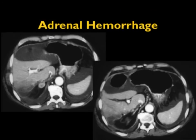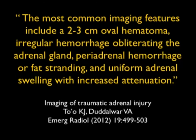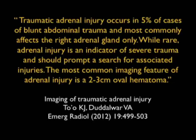Here's a good example of a patient who had resection of the liver and kidneys post-trauma — high density, right adrenal gland, very dense and round. That's classic adrenal hemorrhage. Per an article by Toki, the most common imaging features include a 2–3 cm oval hematoma, irregular hemorrhage obliterating the adrenal gland, perirenal hemorrhage or fat stranding, and uniform adrenal swelling with increased attenuation. Traumatic adrenal injury occurs in about 5% of cases of blunt trauma and most commonly affects the right adrenal only.